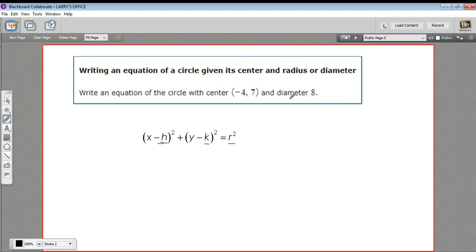And figuring out the radius here is no problem. A radius is just half the diameter, so r equals 4. And h and k are these values here.